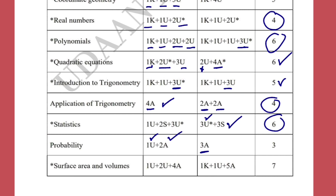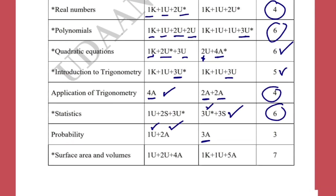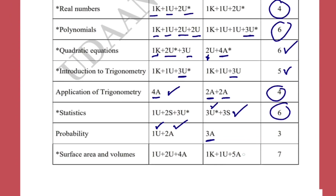Surface Areas and Volumes is the highest-scoring chapter, with no theorems — it is directly dependent on the formulas. You can expect one four or five-mark question from this chapter. In previous years, a five-mark question came from Surface Areas and Volumes, and you should be able to solve all the exercises.